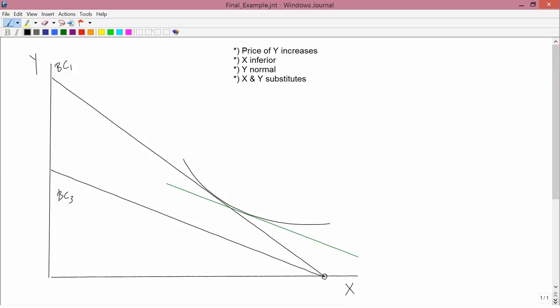So we've got the first part. The easiest one to do next is the last one: x and y are substitutes. Remember that the inferior-normal stuff has to do with income changes. There are no income changes here, so we're going to have to draw an imaginary budget constraint. But for substitutes and complements, you just go from the initial point to the final point.